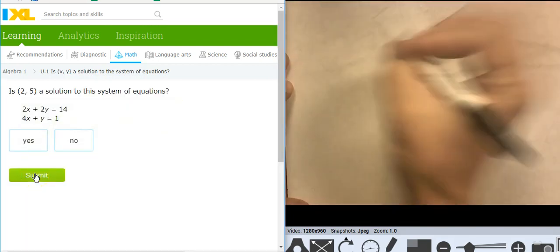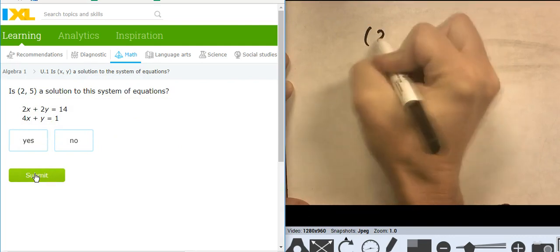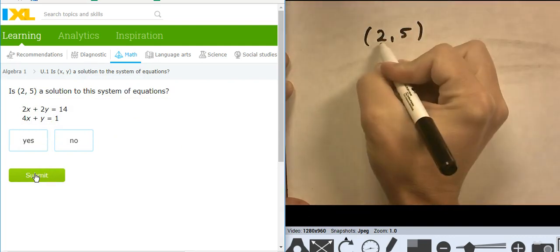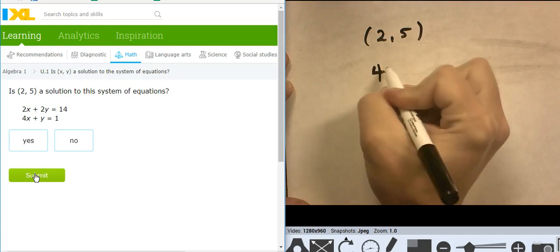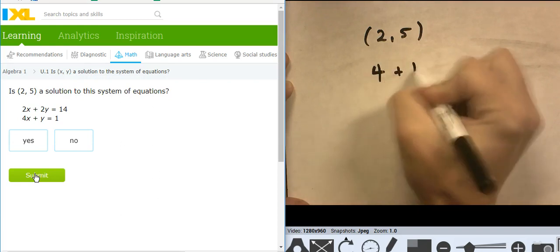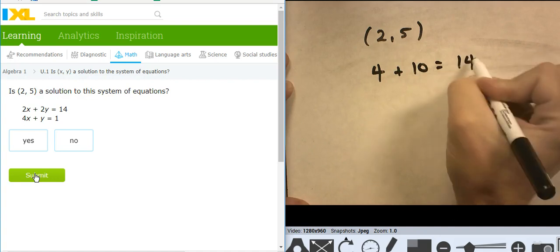Let's see. 2x, so 2x, which is 4, 2y, which is 10, equals 14. That worked.